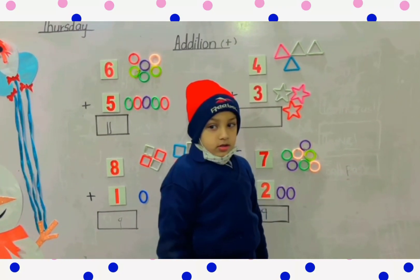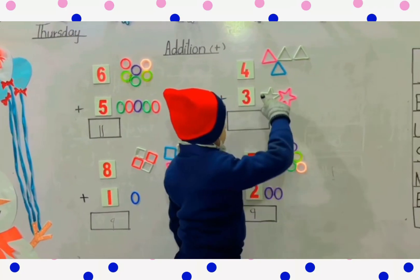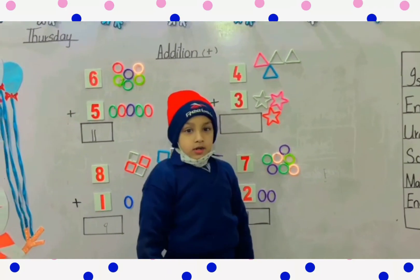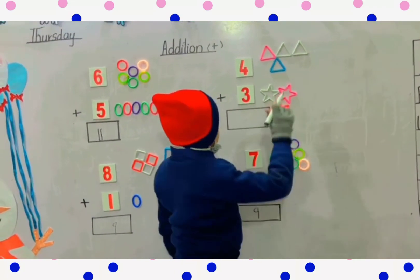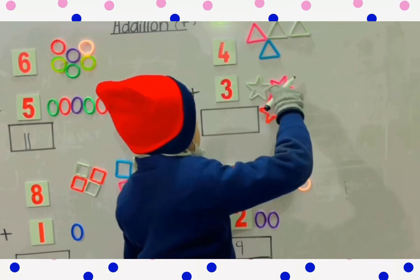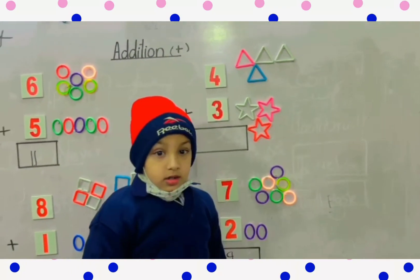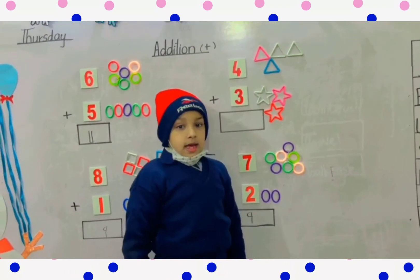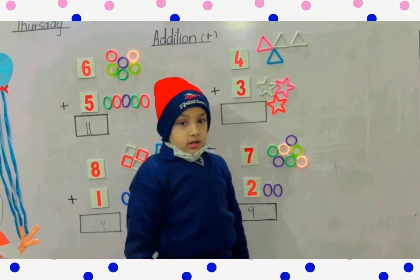Now count the star shapes. How many star shapes are there? One, two, three, four, five, six, seven. Now count all together. How many total shapes are there? Seven.